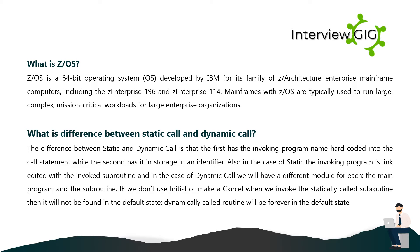What is the difference between static call and dynamic call? In a static call, the invoking program name is hard-coded into the call statement, while in a dynamic call it is stored in an identifier in working storage. In a static call, the invoking program is link-edited with the invoked subroutine. In a dynamic call, there is a different module for each — the main program and the subroutine. If we don't use INITIAL or issue a CANCEL, the statically called subroutine will not be in its default state, whereas a dynamically called routine will always be in its default state.